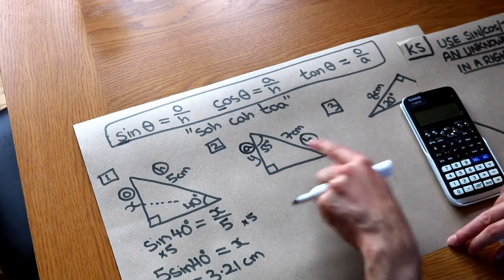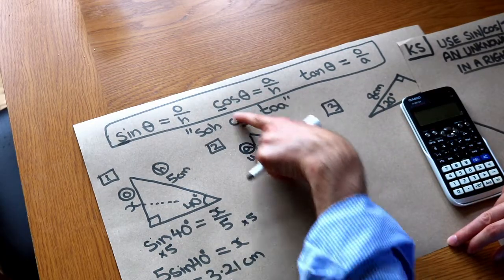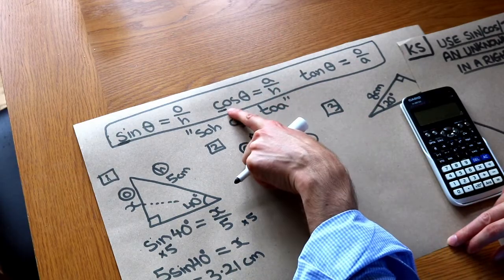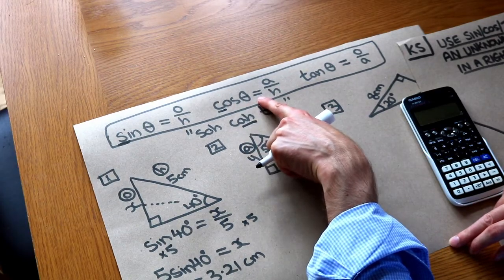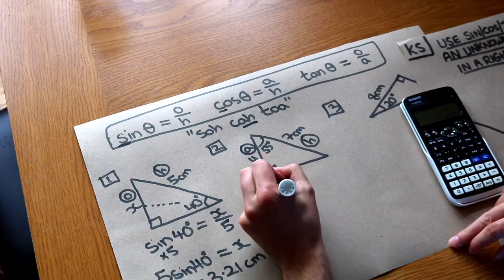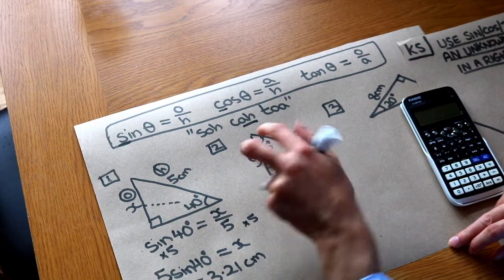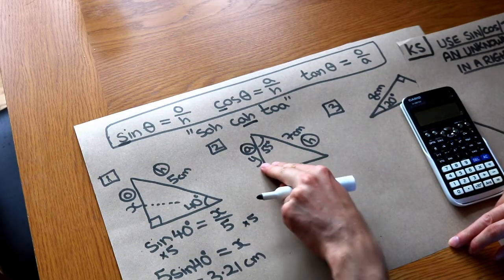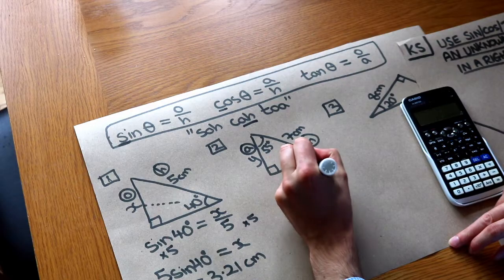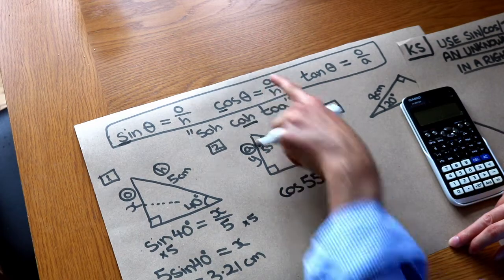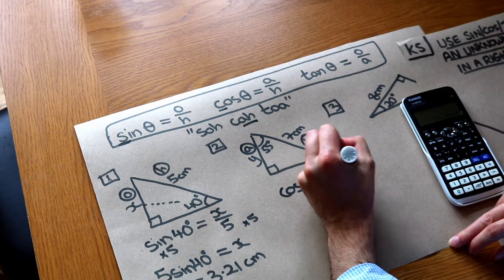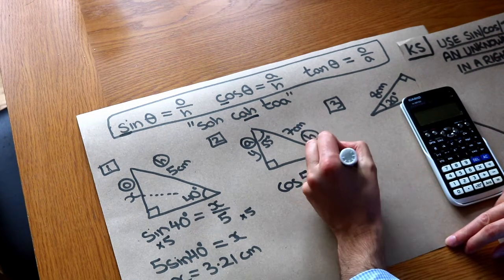And then we check. SOHCAHTOA, look. CAHТОА involving the A and the H. That's this one here. So cos of the angle is A over H. So cos of that angle of 55 degrees, remember we ignore the 90, that doesn't count as our angle here, is equal to A which is the Y over the H which is 7.